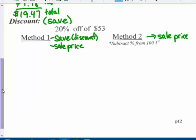Method one: I'm going to change my percent to a decimal and multiply. I'm saving 20% off a $53 item. 20% times $53 equals $10.60. So that $53 jacket should be about $10 less.